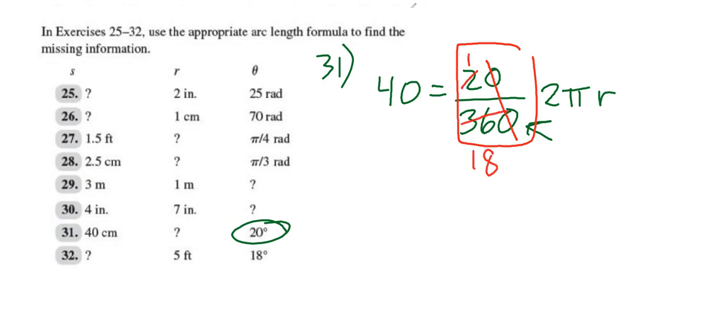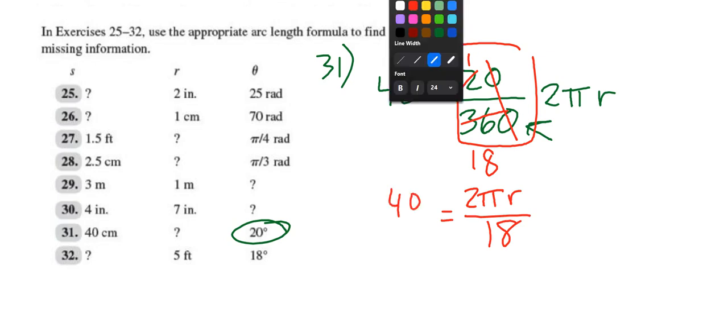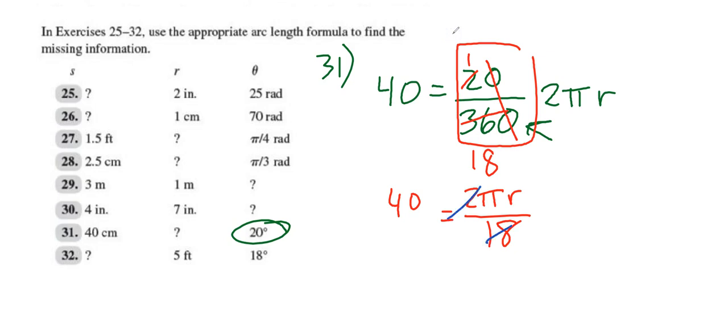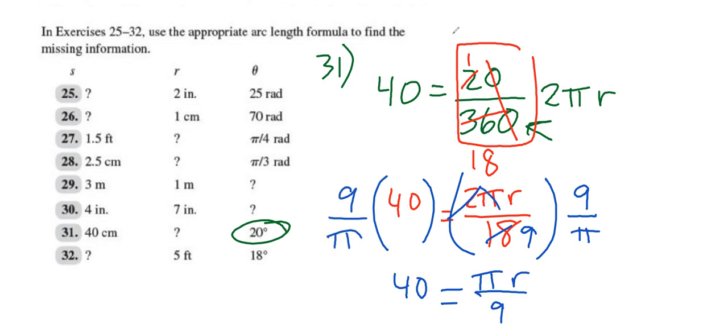So now we've got 2πr over 18 equals 40. Any more reducing? Yeah, what else? 9 times. Okay, what should we multiply both sides by? 9 over what? 9 over what?